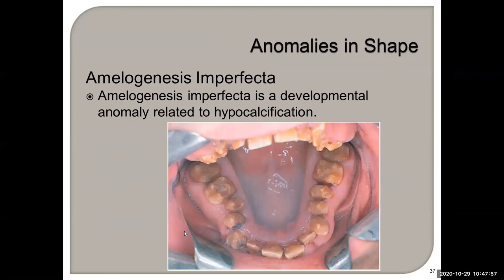Amelogenesis imperfecta — break the word apart. This is a developmental anomaly related to hypocalcification where there is essentially no enamel.